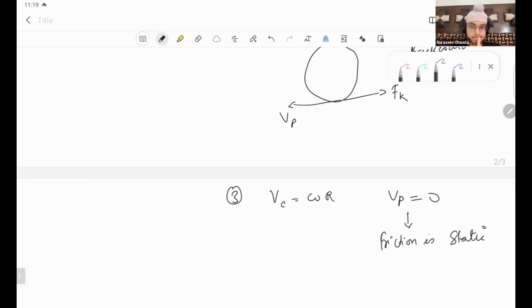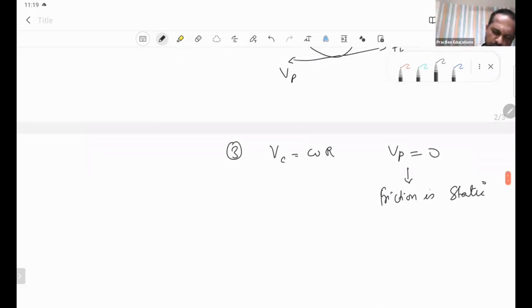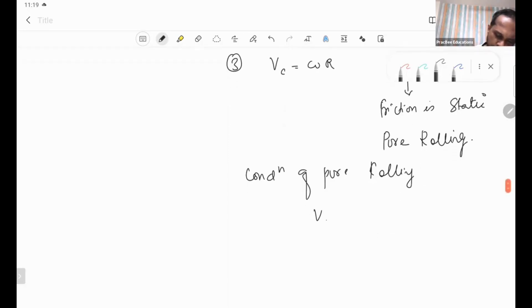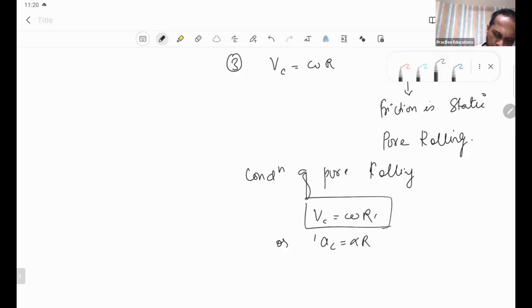This is the most important one for us and this is called pure rolling. Most of the questions will be from pure rolling. The condition of pure rolling is Vc equals omega R or Ac equals alpha R. Let me differentiate and now how to solve questions, we can discuss how questions are solved.